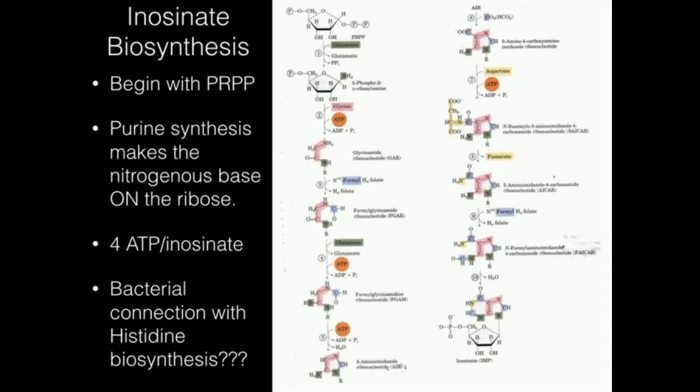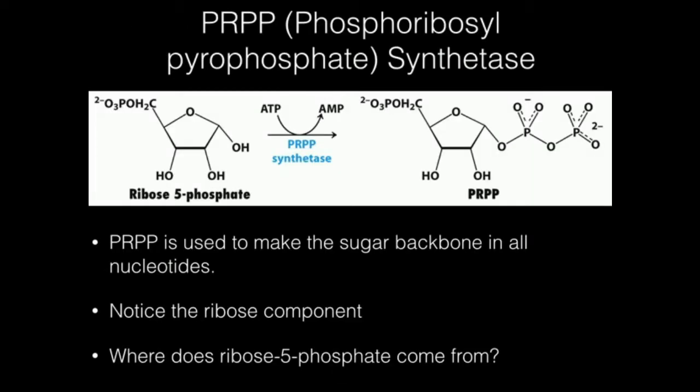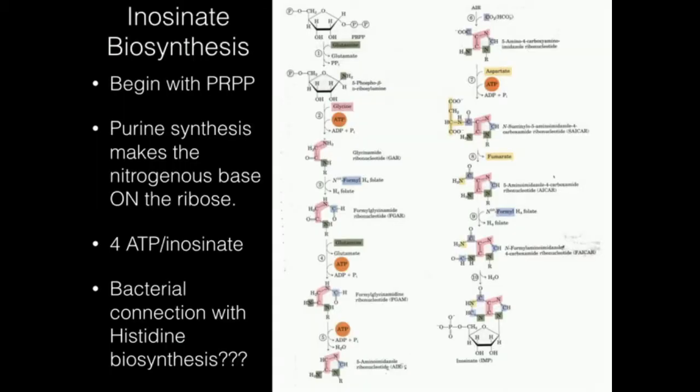In the previous video, we saw the synthesis of PRPP, which is catalyzed by PRPP synthetase. The starting point for that reaction is ribose 5-phosphate, which our cells are able to siphon out of the pentose phosphate pathway. Now that PRPP is made, it's going to be our starting point for purine synthesis.